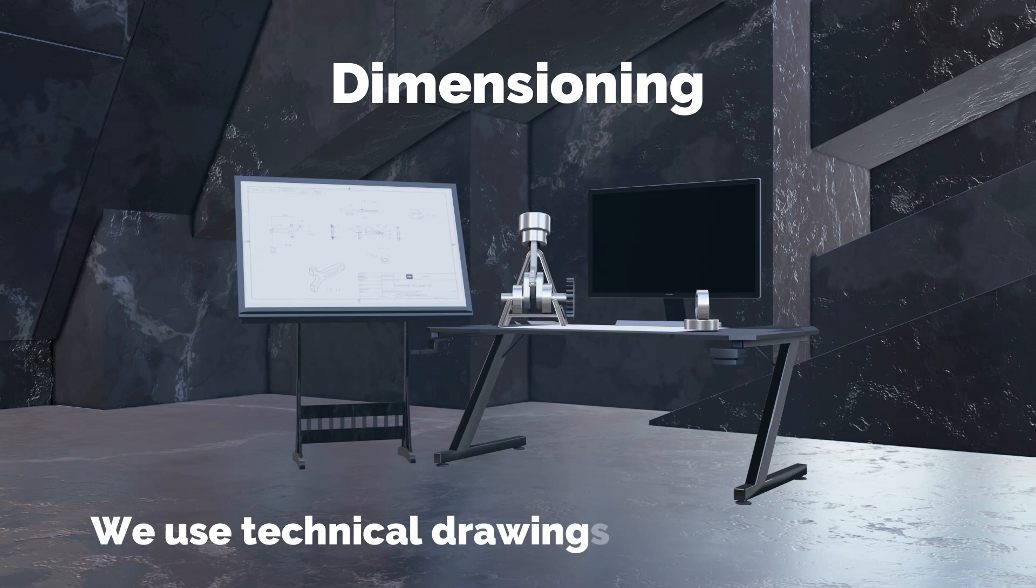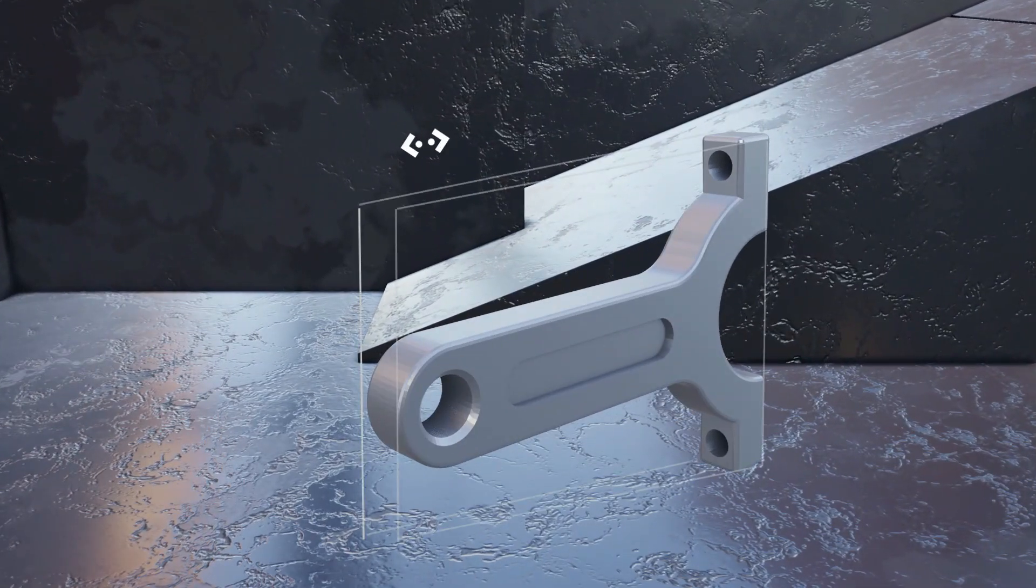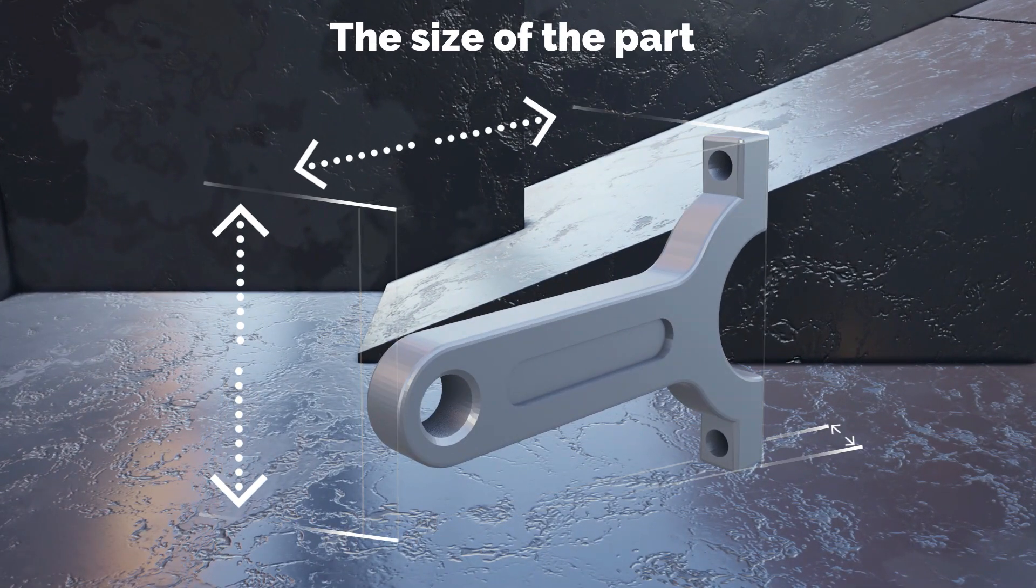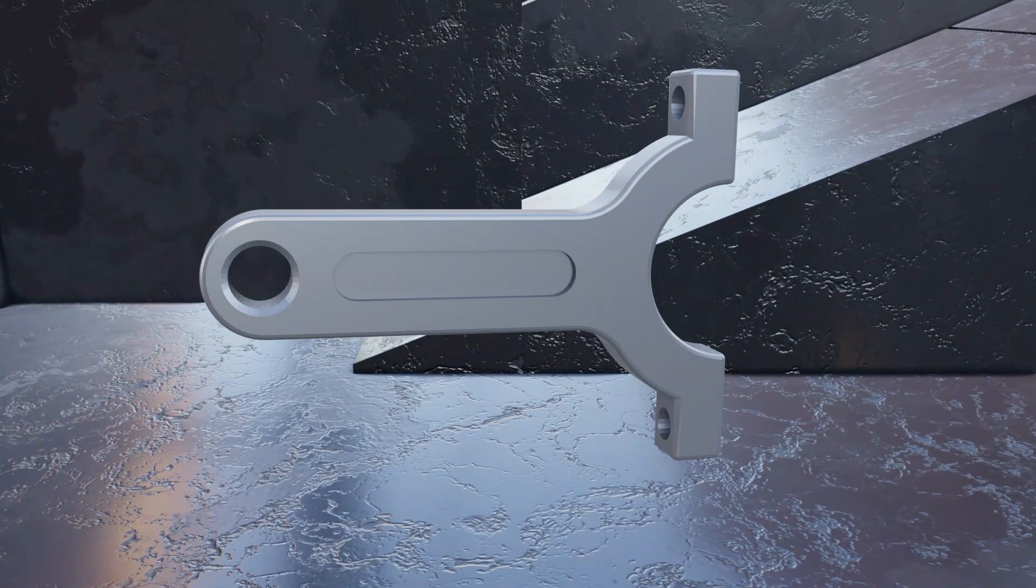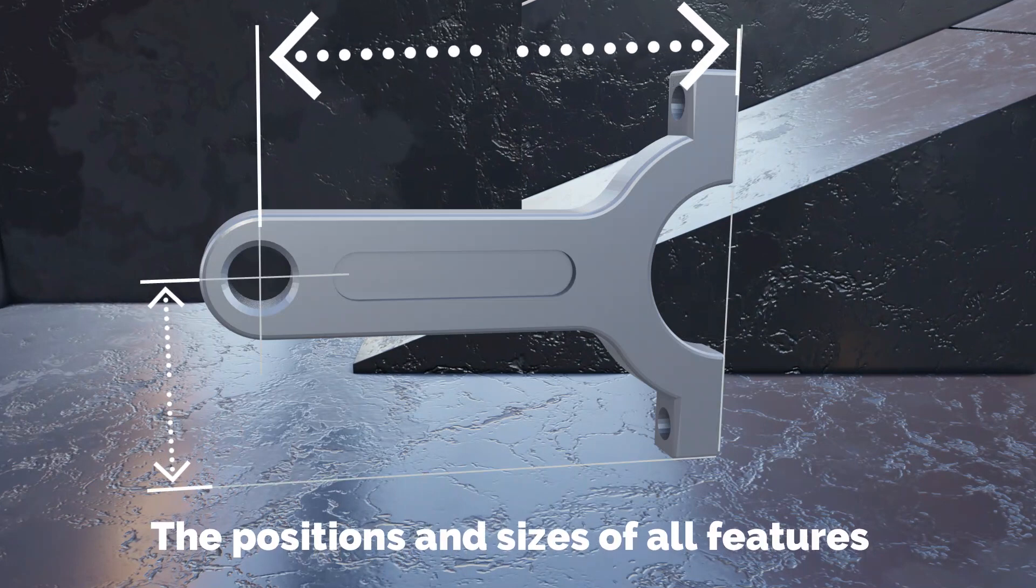We use technical drawings to describe parts. This description could be used for manufacturing or for quality control. It could also be used for cost calculation. In any case, to properly describe a part, not only do you need to define the size of the part, but also you need to define the positions and sizes of all the different features of the part as well. This is basically what we call dimensioning a part.